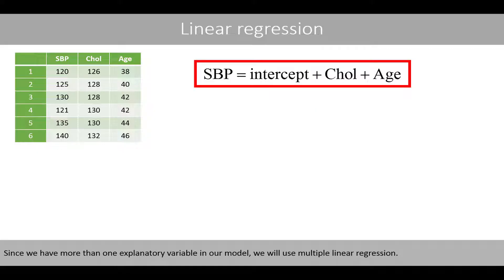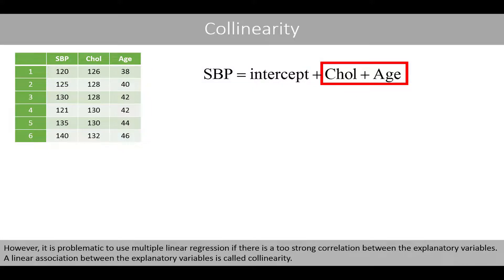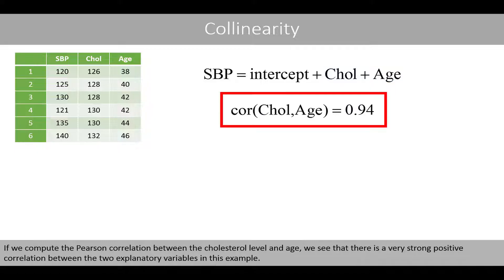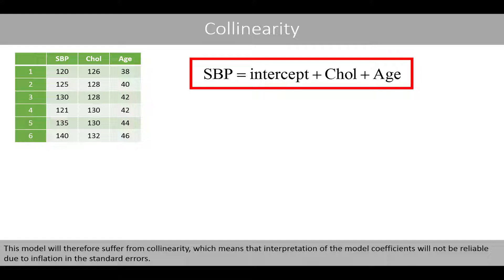Since we have more than one explanatory variable, we'll use multiple linear regression. However, it is problematic if there is too strong a correlation between explanatory variables. A linear association between explanatory variables is called collinearity. Here, there is a very strong positive correlation between cholesterol level and age, meaning the model will suffer from collinearity, making coefficient interpretations unreliable due to inflated standard errors.